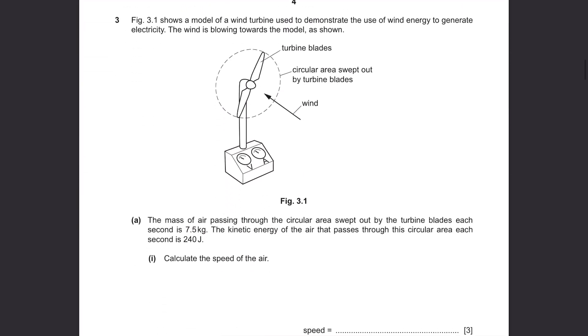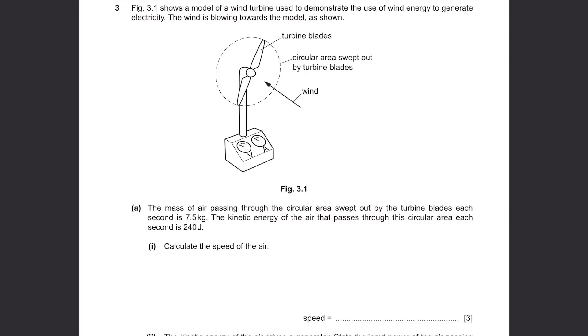Question 3. Figure 3.1 shows a model of a wind turbine used to demonstrate the use of wind energy to generate electricity. The wind is blowing towards the model as shown, flowing from this direction, the turbine blades are there and the circular area swept out by turbine blades. Part A. The mass of air passing through the circular area swept out by the turbine blades each second is 7.5 kilograms. The kinetic energy of the air that passes through this circular area each second is 240 joules. Calculate the speed of the air.